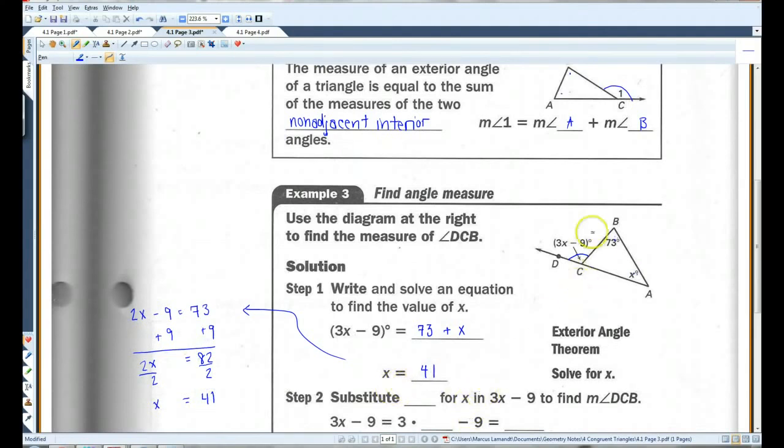Okay. But, we're not done yet. They don't ask for x. They ask for the measure of DCB. So, we've got to plug it in. I'm going to substitute 41 for x and 3x minus 9 to find the measure of angle DCB.